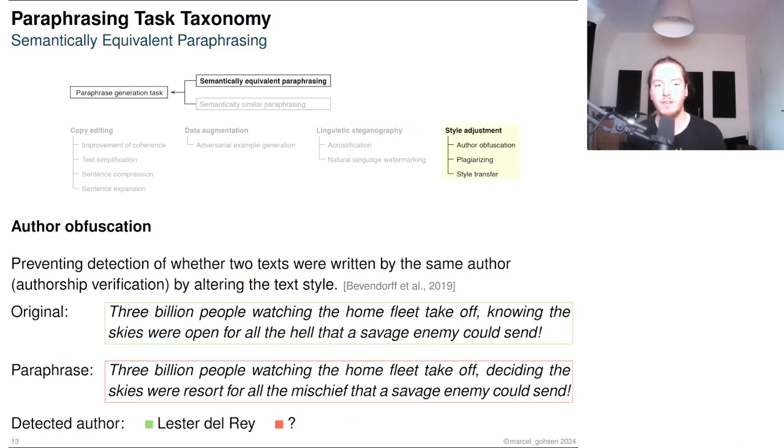The goal of author obfuscation is to prevent the verification that two texts are written by the same author by altering the text style. The examples show an original text by Lester Del Rey that has been modified by an author obfuscation system to prevent automatic author verification.